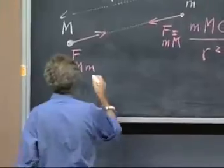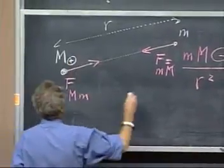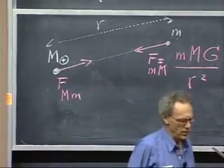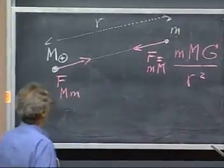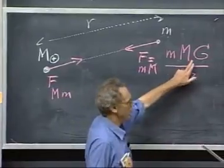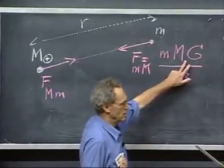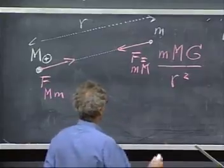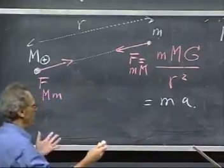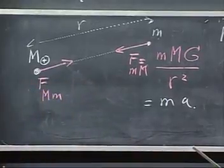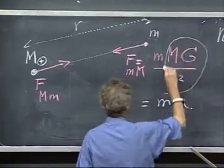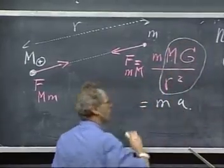If this were the Earth and I am here, and this is my mass, then I experience a force which is given by this equation. This would be then the mass of the Earth. F equals ma. So if I'm here, I experience a gravitational acceleration, and the gravitational acceleration that I experience is therefore given by MG divided by r squared.